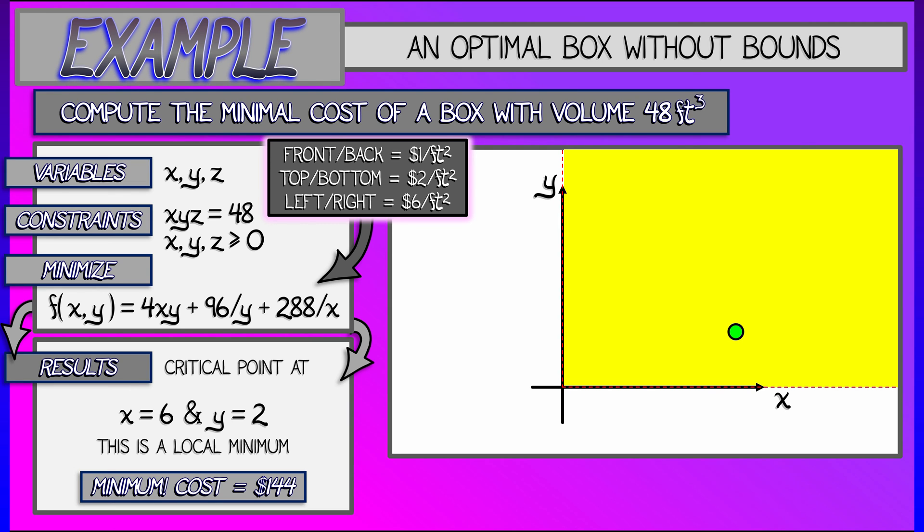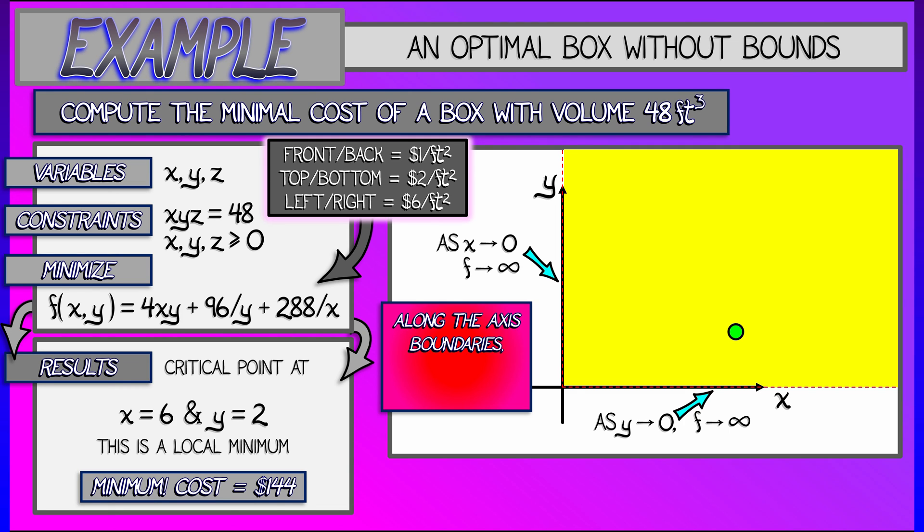In the XY plane, the set of feasible values are really the first quadrant. I can have all non-negative values of both X and Y. Now at the obvious boundaries where X is going to zero or Y is going to zero, the function clearly blows up and goes to infinity. You can see that, you got X and Y in denominators. But this is not all there is to the boundary.